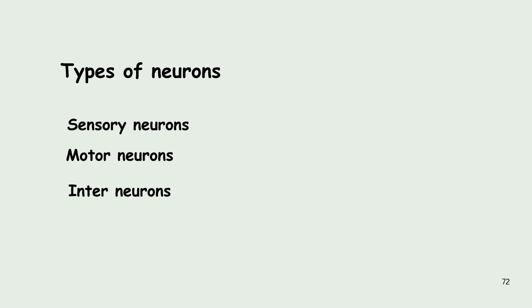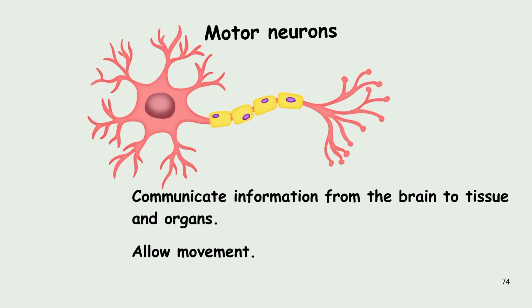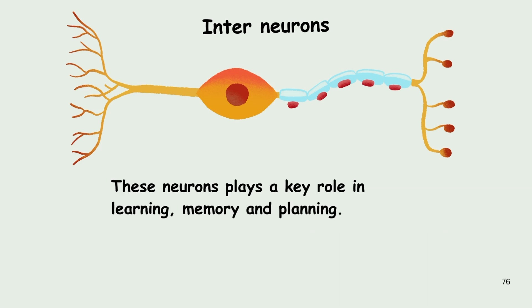Now let us see the types of neurons. There are mainly three types: sensory neurons, motor neurons and interneurons. Sensory neurons respond to sensory information — they receive signals from the environment and send them to the brain. Motor neurons communicate information from the brain to the tissues and organs, allowing movement of the body. The last type is the interneuron. The majority of neurons are interneurons, which transmit information between sensory and motor neurons. These neurons play a key role in learning, memory and planning.